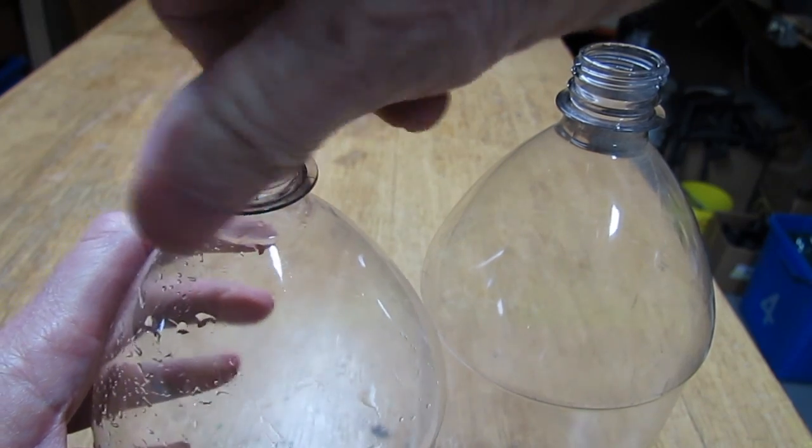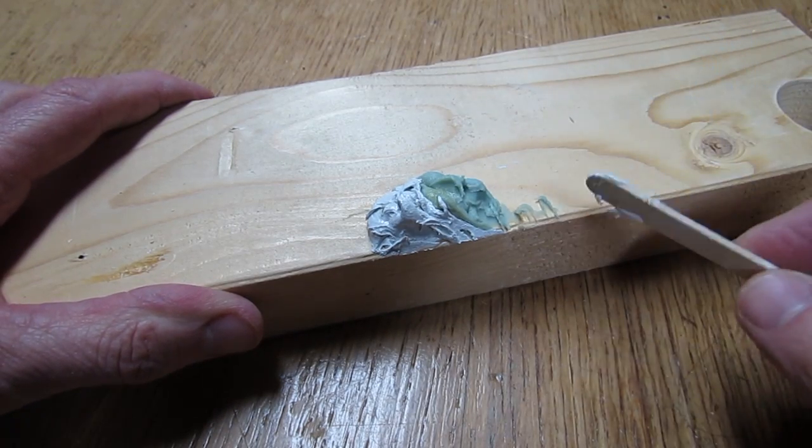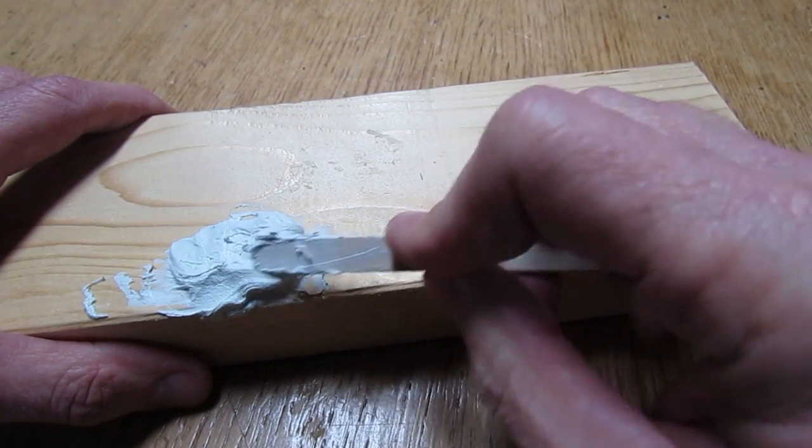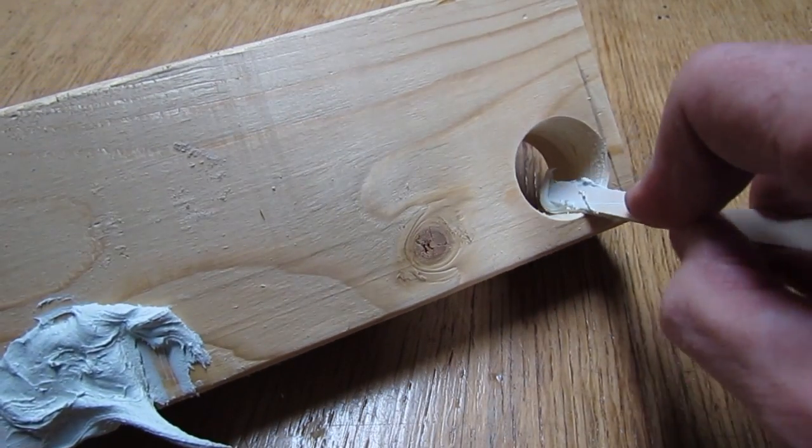Now put the lids back on the bottle and tighten them up. You want to get yourself some two-part epoxy that's meant for gluing plastic together and mix it up. Now take the epoxy and put a nice thin layer inside of the hole that we've drilled.